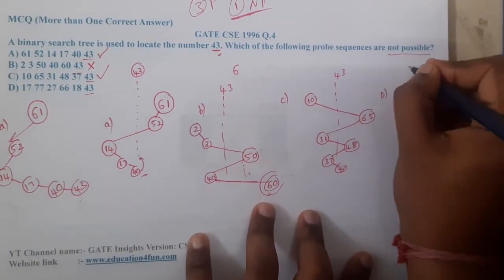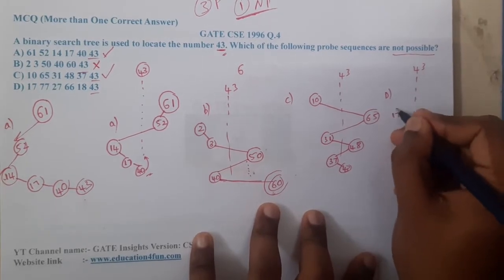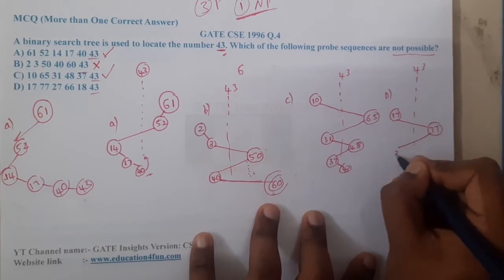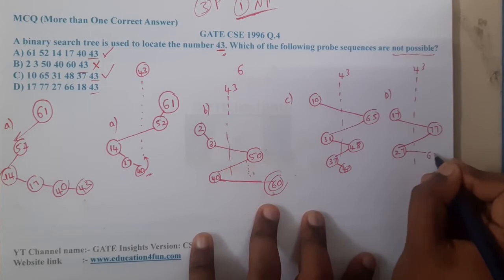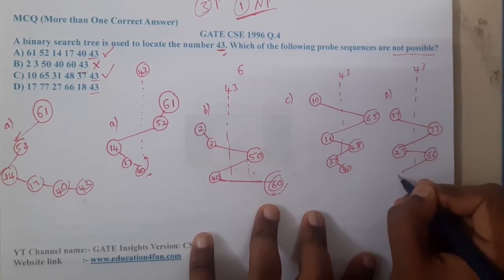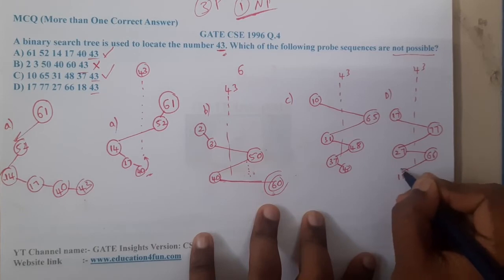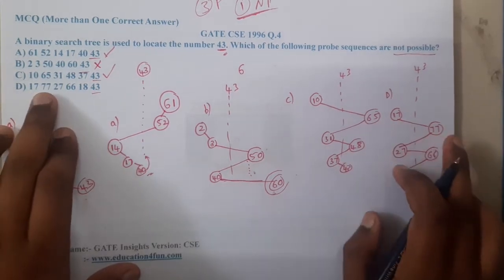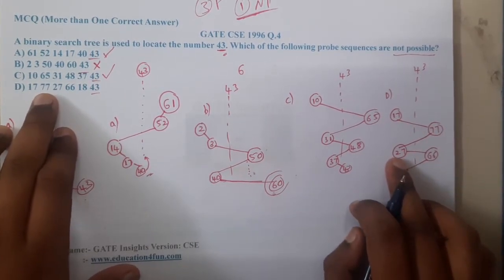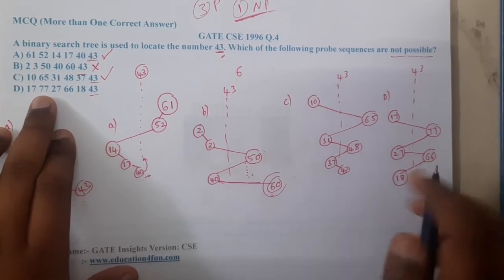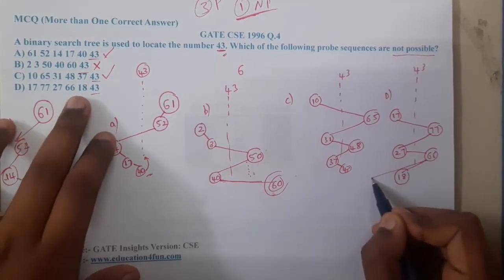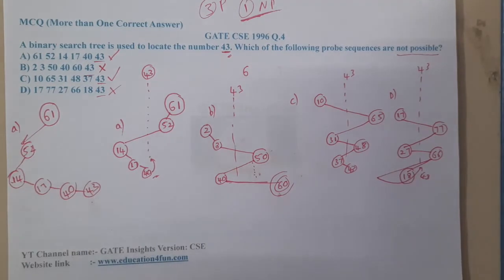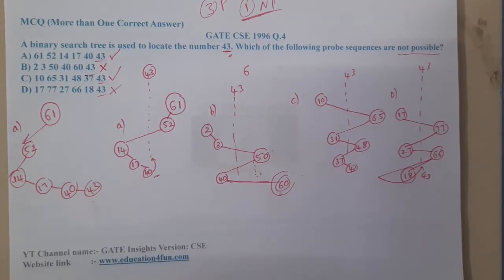In Option D, we are searching for 43 and start at 17. We went all the way to 77, understood it was too far, and came back to 27. Then went too far again to 66, and then came back to 18. I think this series is also wrong. From 27 you went to 66, and from 66 you came back to 17 — you are going too far right. After that you found 47. Let me cross-check the answer.